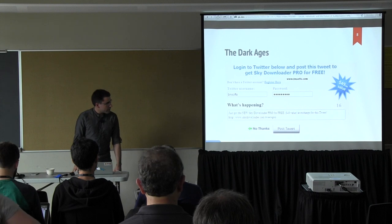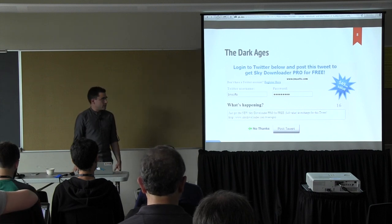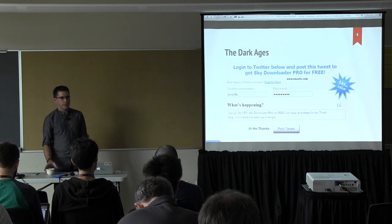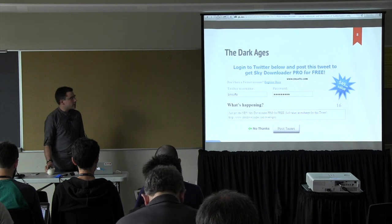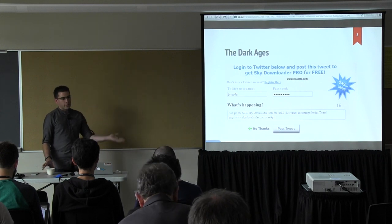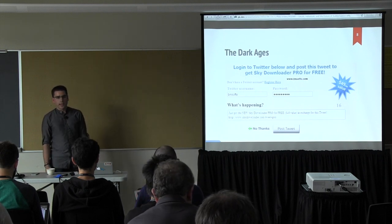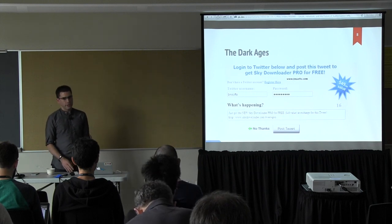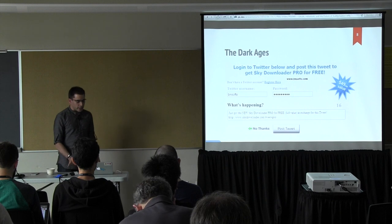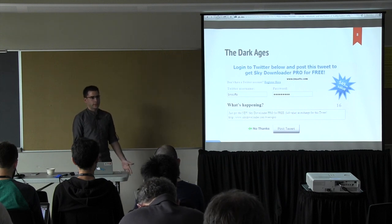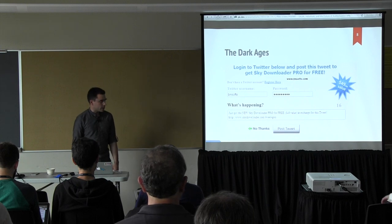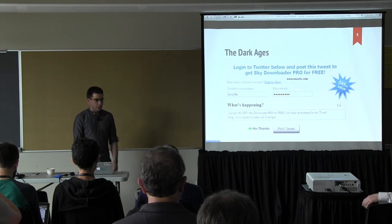Before the Twitter API was very well formed — before OAuth — it was just using username and password auth. And that, of course, was a huge problem. You'd see stuff like this all the time: post this tweet and you'll get this free download, but in order to post the tweet you'd have to enter your Twitter username and password. Nobody does that today, because Twitter and Facebook have done a good job of pushing the experience of OAuth. But this was a problem.